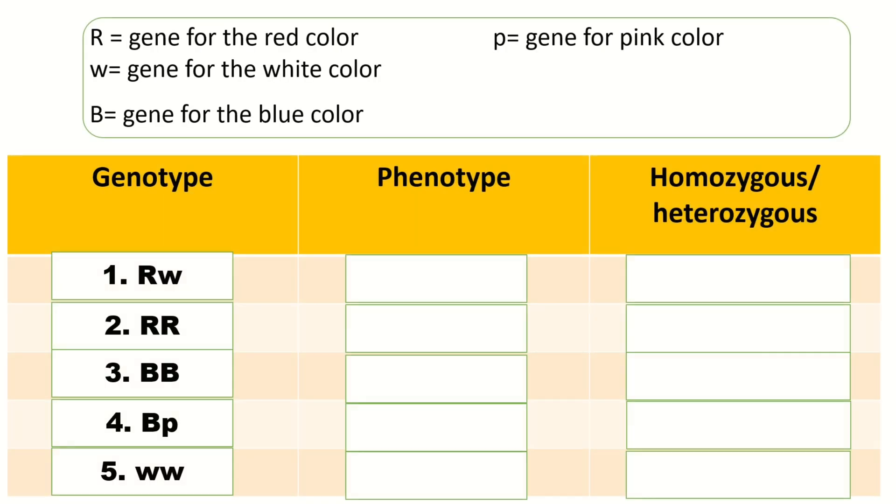Let's do this activity. Complete the table. Capital R equals gene for the red color. Small w equals gene for the white color. Capital B equals gene for the blue color. Small p equals gene for pink color.